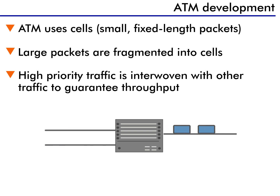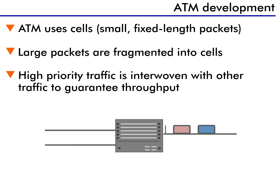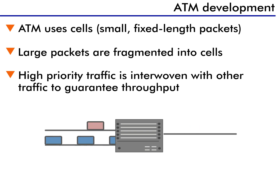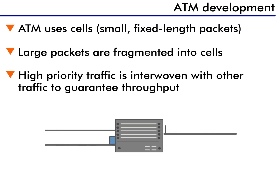But what about a switch using ATM? ATM uses cells instead of frames. A cell is a small, fixed-length packet of data. Frames, in comparison, have a variable length.